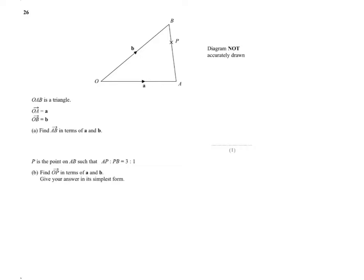So a fairly straightforward vectors question. First of all, we're asked to find AB, express AB in terms of A and B as a vector.